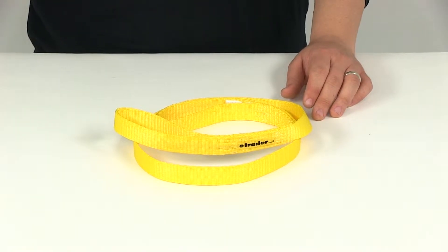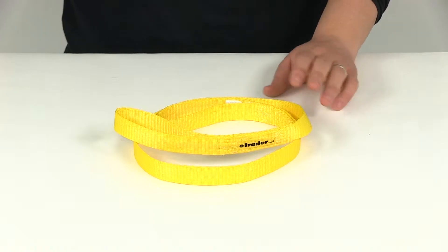Today we're going to be taking a look at part number EM09005. This is the Ericsson Single Ply Lift Sling.